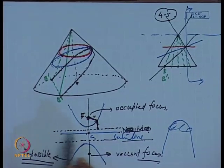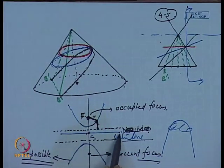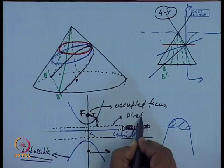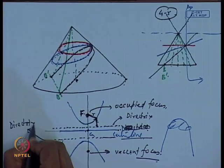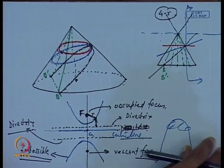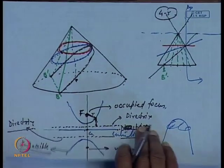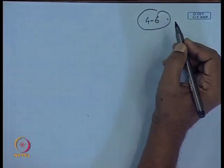The impossible trajectory is just the mirror image of the physical trajectory in the center line. This whole thing is reflected there, and that is your directrix. This is also a directrix. Thus we have seen how the hyperbola, parabola, ellipse, and circles are generated.